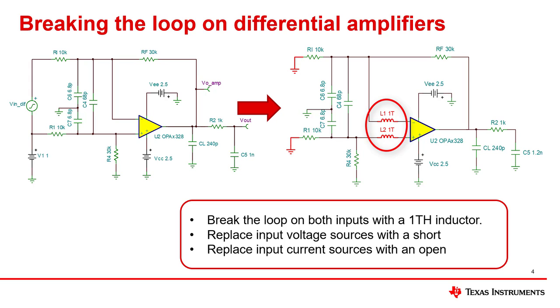The 1 teraHenry inductor is effectively an open for any frequency other than 0 Hz, but acts as a short at 0 Hz. Thus, the circuit can still get a valid DC bias, but the feedback loop is broken for all AC signals.